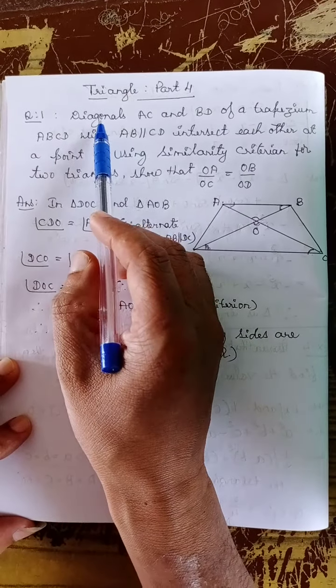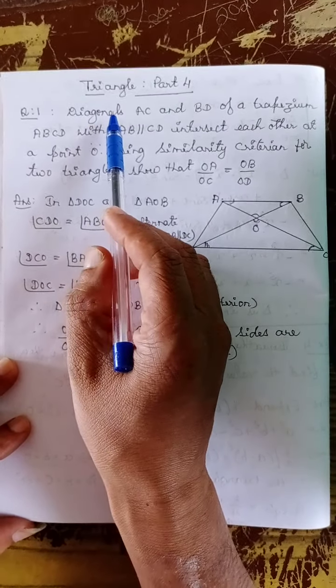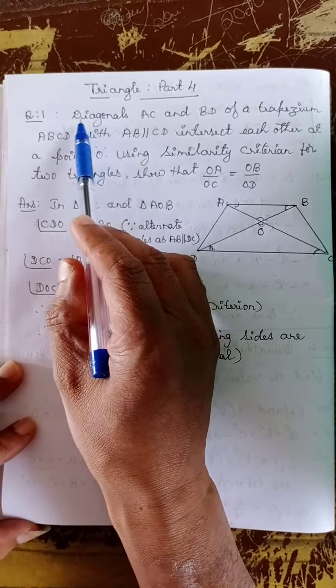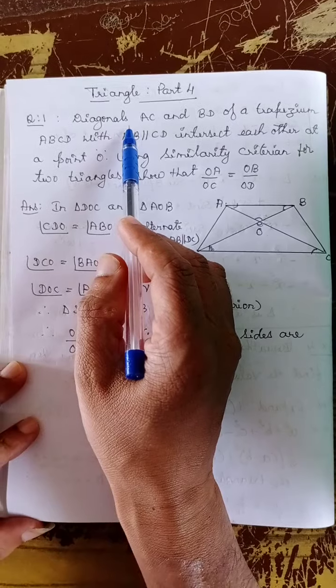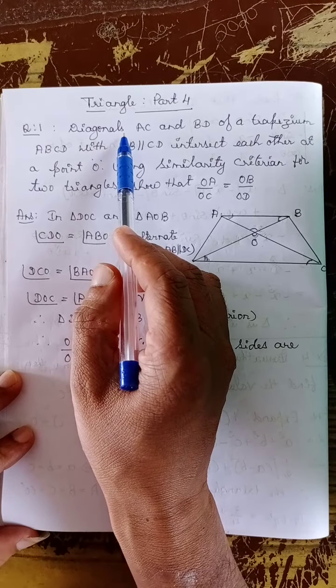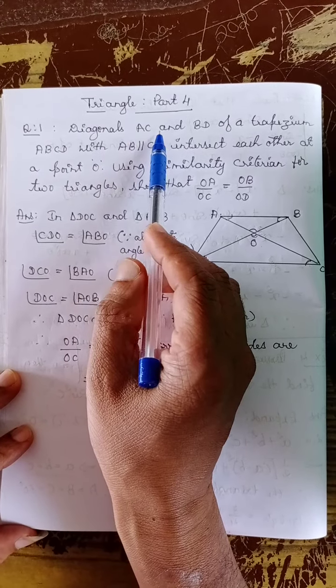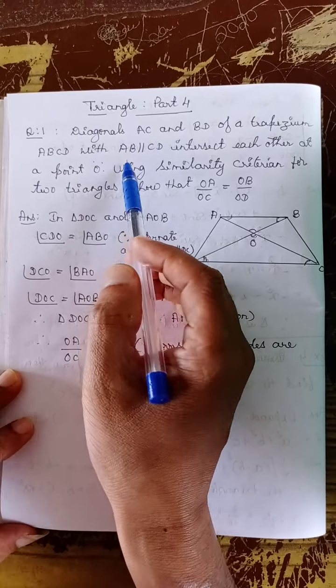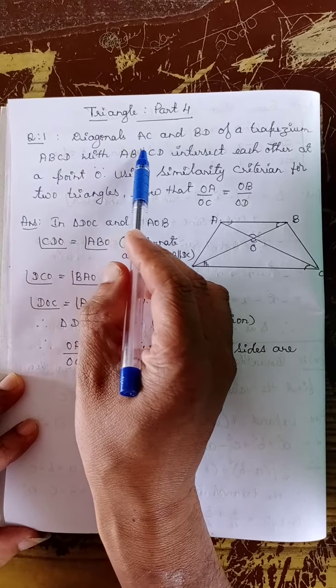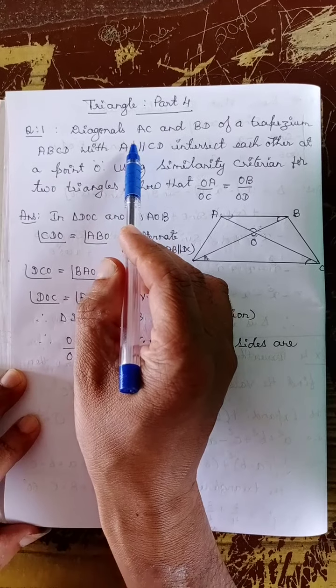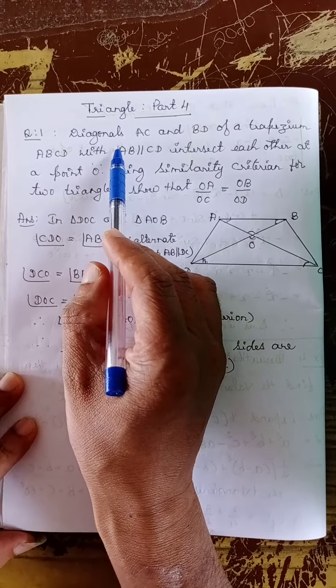Welcome dear students. In the last class we discussed the angle-angle similarity criteria — it's a theorem — and some problems. In this class we again discuss problems related to the AA similarity theorem.